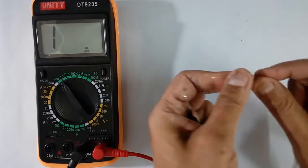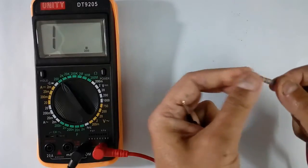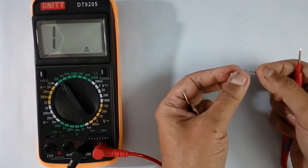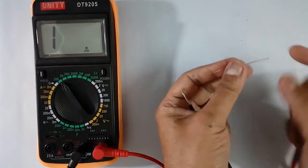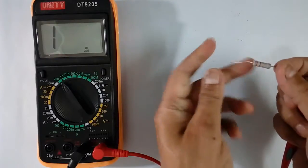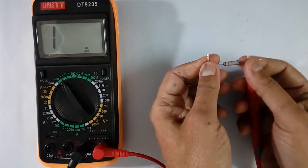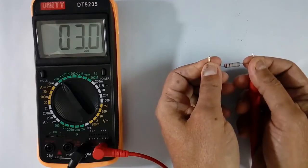We have to clean this lead. There will be dust. Because your resistance value is very low. So dust may create some problem. I have already cleaned. Now you see here. It is coming 2.9 ohms.